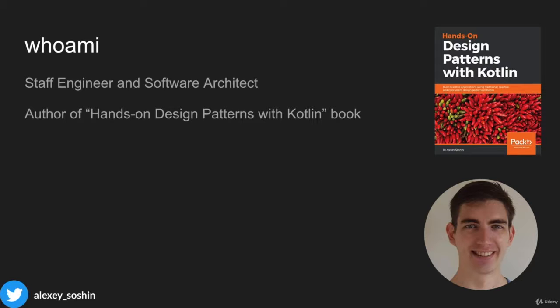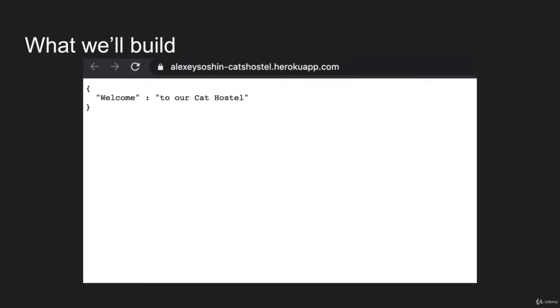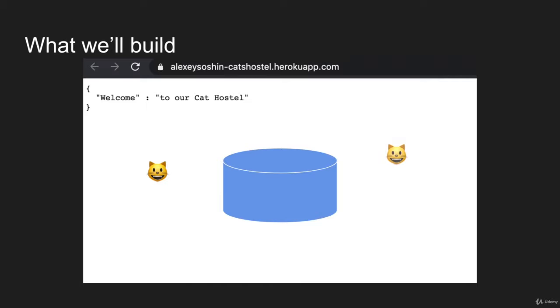Kotlin is a relatively new programming language that is very pragmatic and it's great for developing microservices. The microservice itself that we will build is for a cat hostel. You'll be able to add cats to its database, remove cats from it and list them.